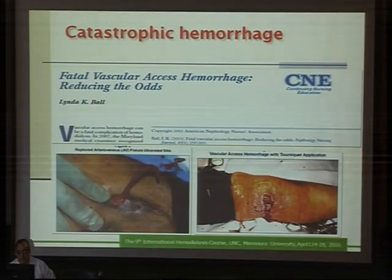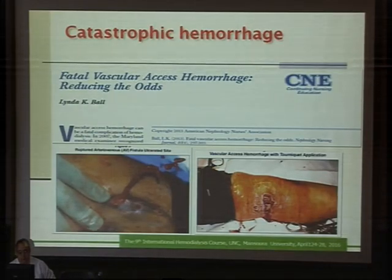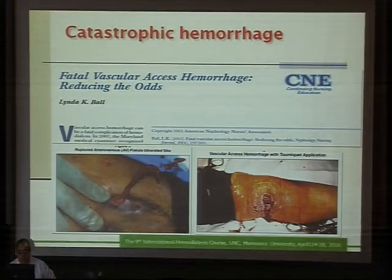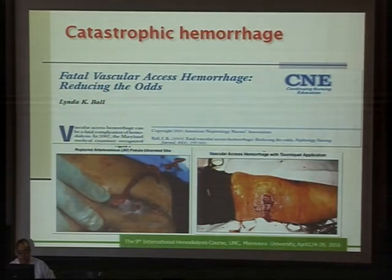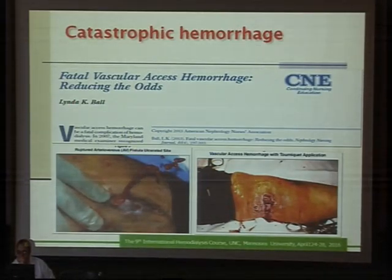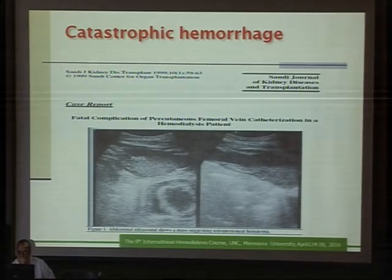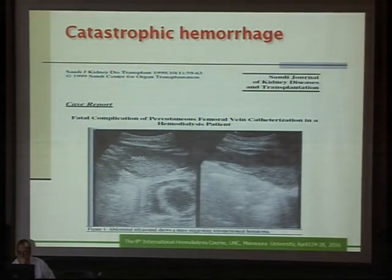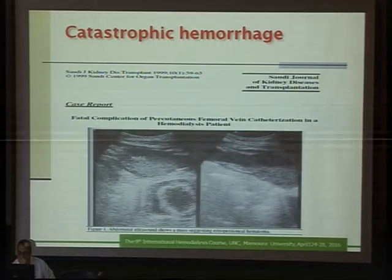Another important cause of catastrophic hemorrhage is the vascular access itself. Commonly this occurs as rupture of an infected fistula aneurysm. In this situation, hemorrhage is controlled with immediate emergency care until the patient is transferred for further management. Another reported complication is massive bleeding during insertion of a femoral catheter due to perforation of the femoral vein, which was catastrophic and resulted in the patient's death.